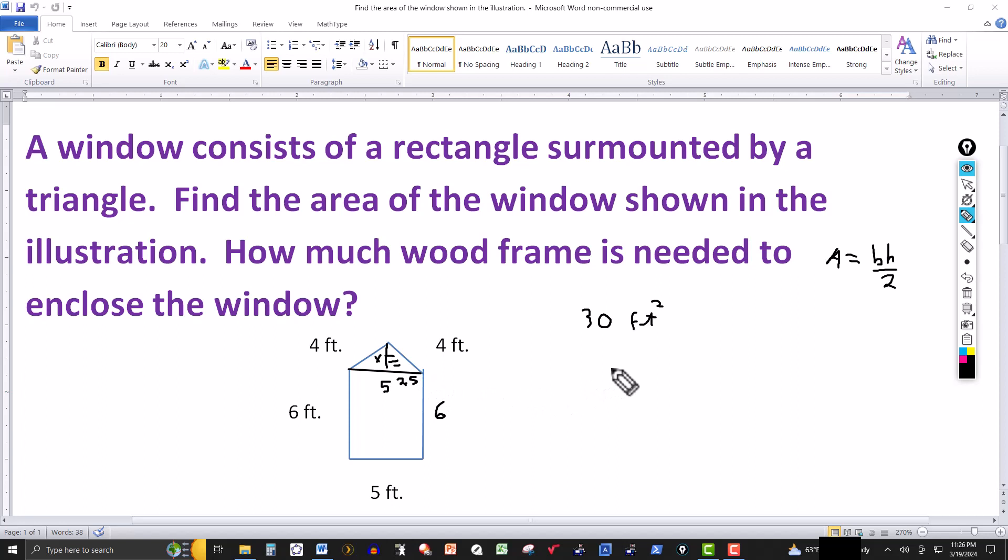So this tells me that x squared plus 2.5 squared should equal to the square of the hypotenuse here, which is 4. So this would be 16. The length of x here then would be the altitude. So let's solve this for x.